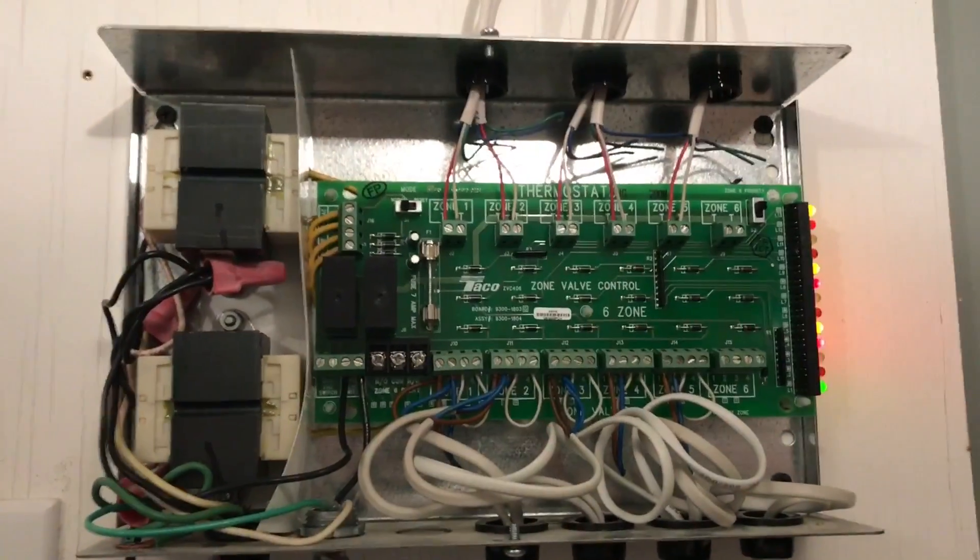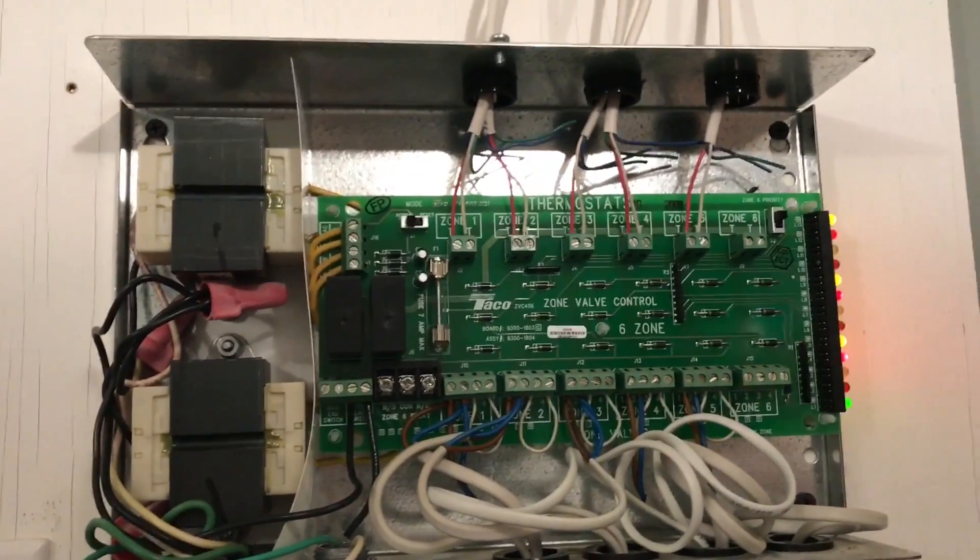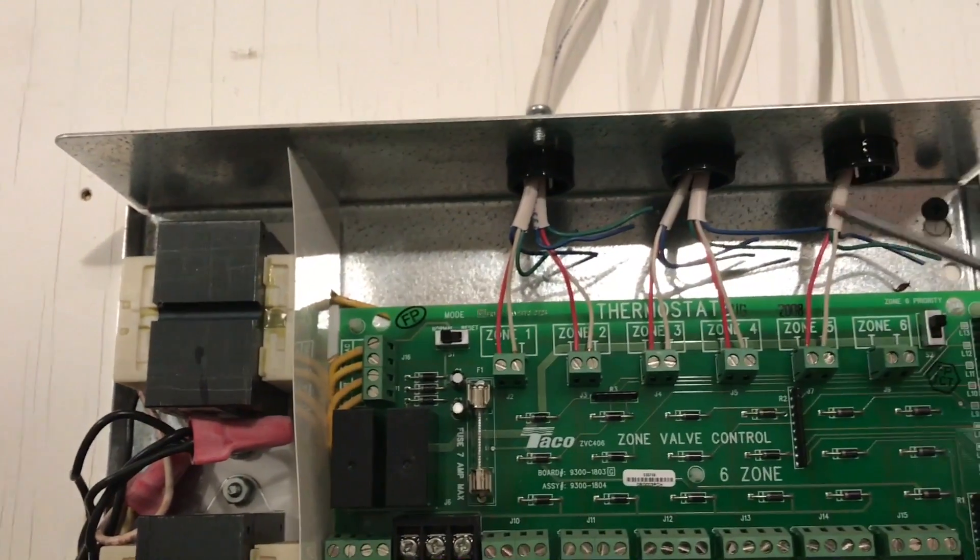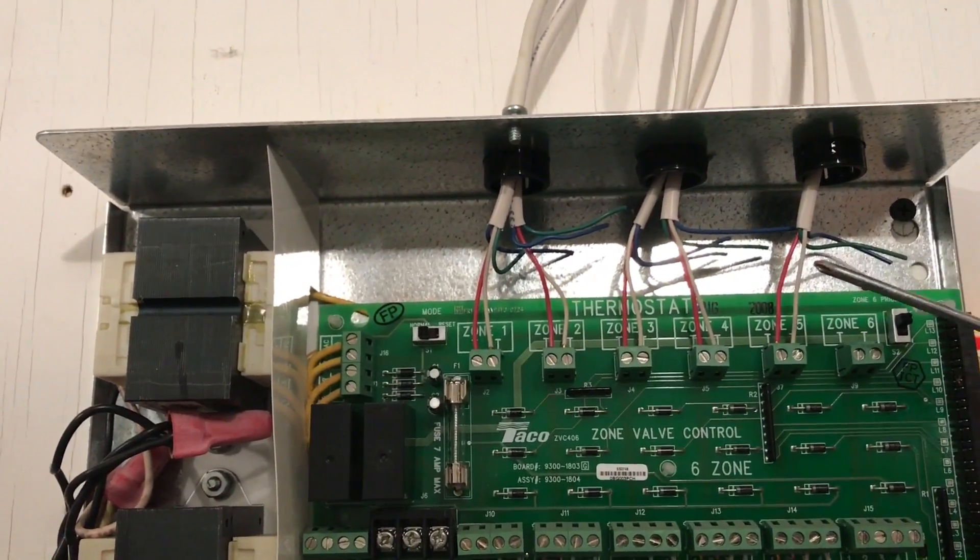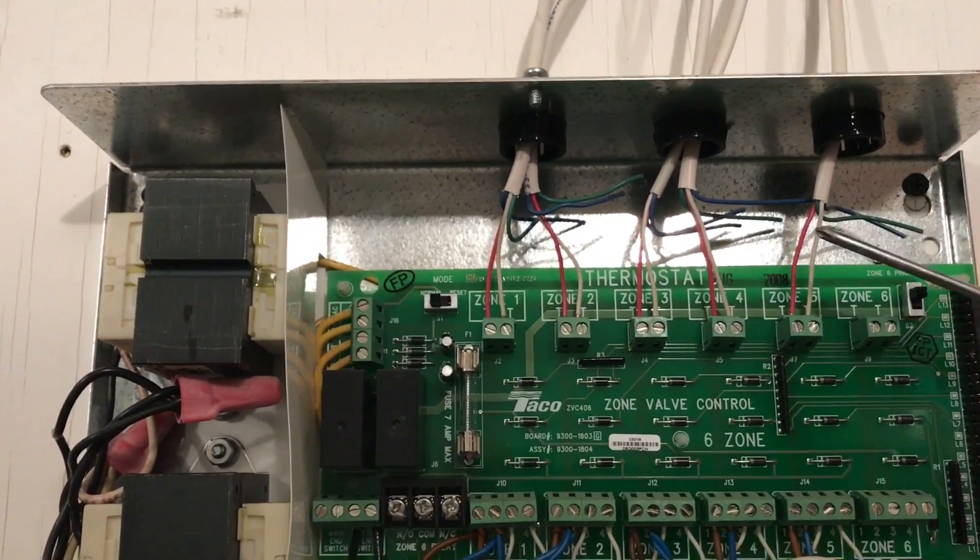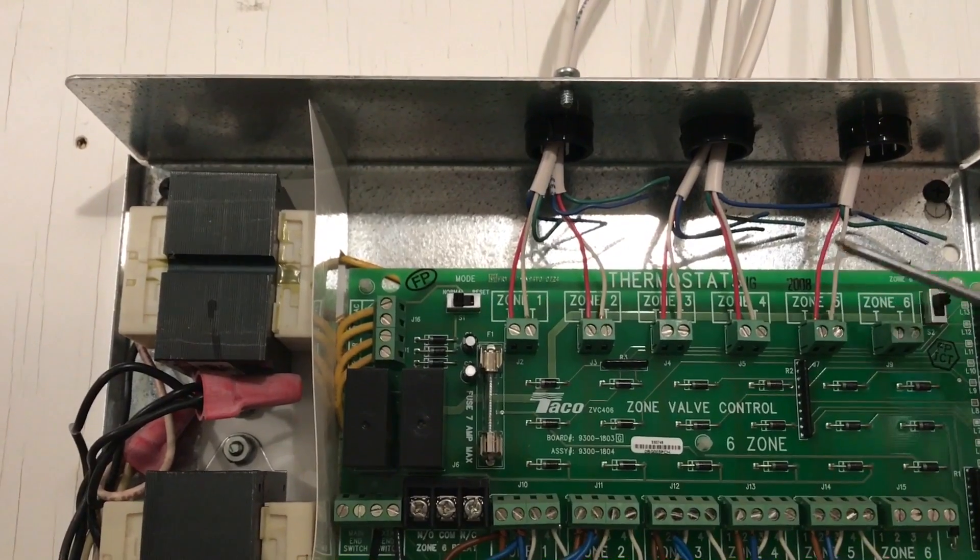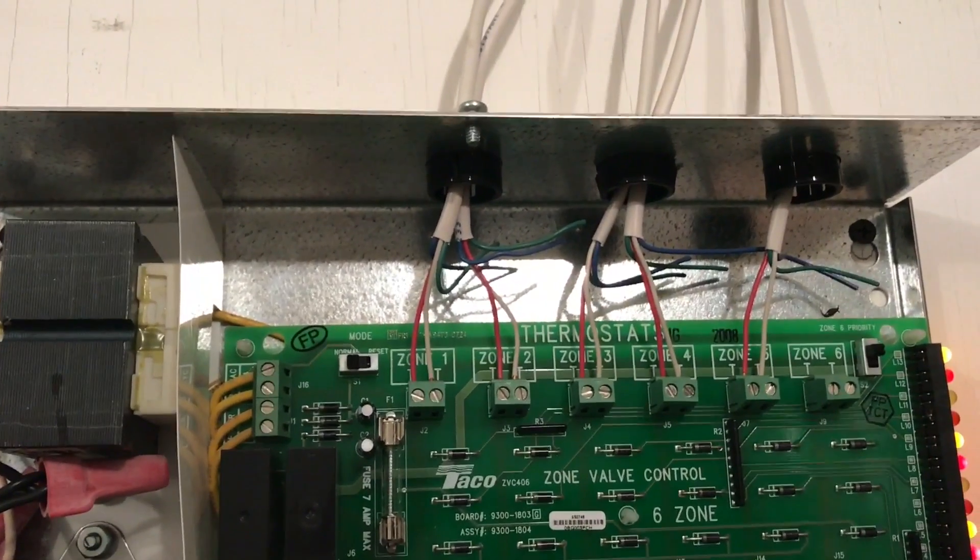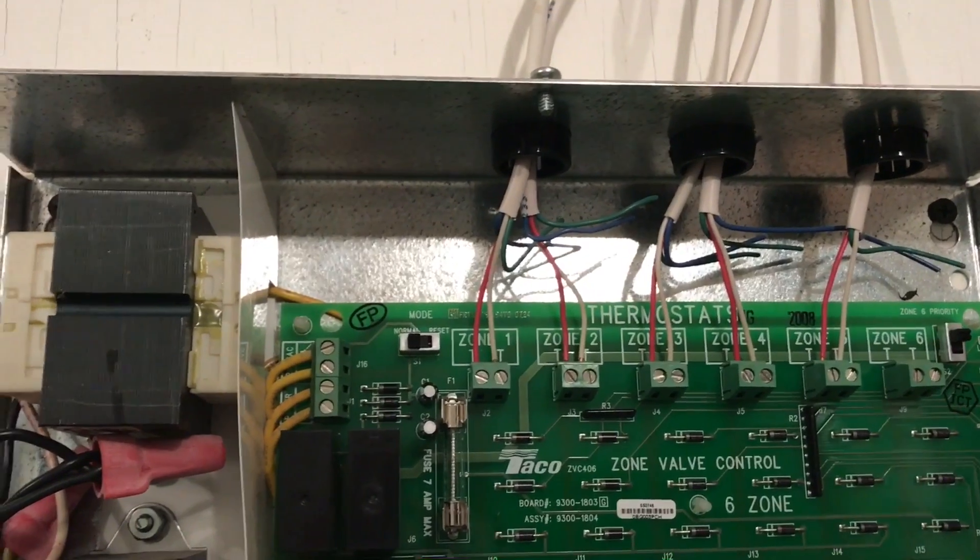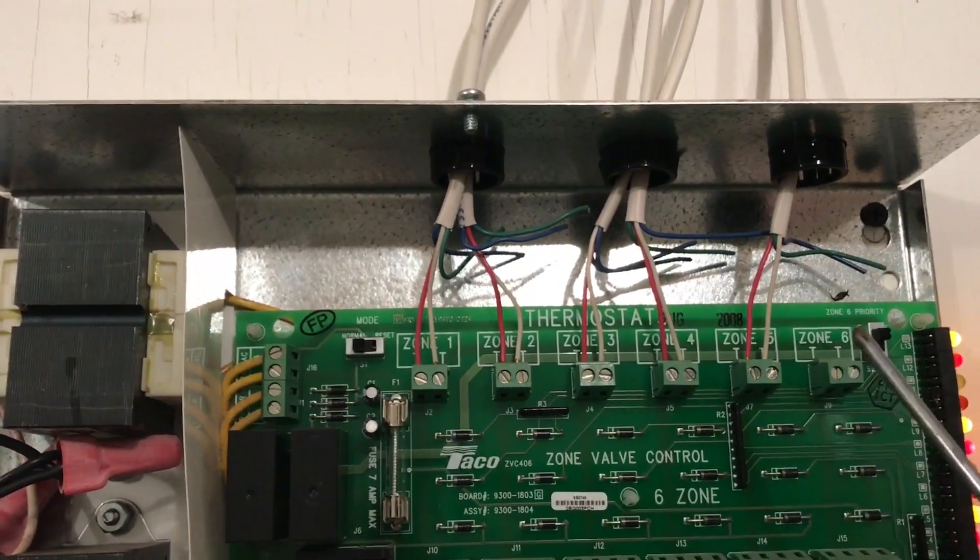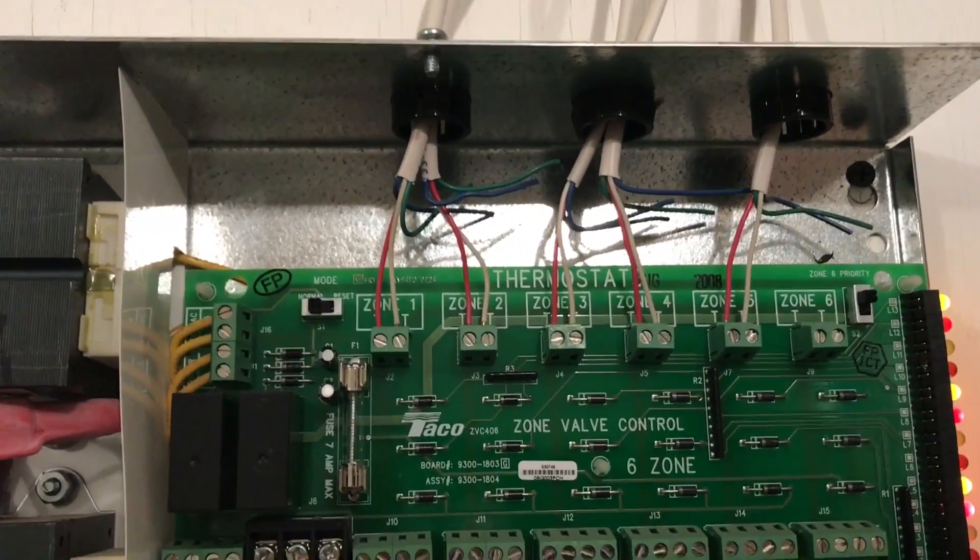So I'm going to go ahead and open this up and expose the wiring and show you how I did things inside the box. Here we are inside the box. Let me point out just a few things. My thermostat wire, I actually used a four wire thermostat cable here, but I only need two. I'm only doing a heating zone there. So I don't need all four wires.